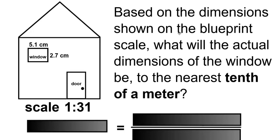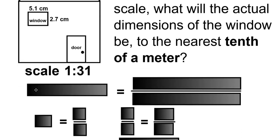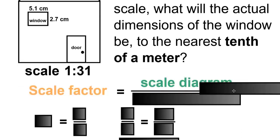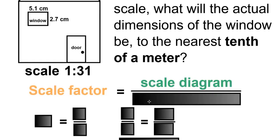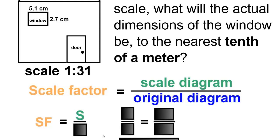Based on the dimensions shown on the blueprint scale, what will the actual dimensions of the window be to the nearest tenth of a meter? To solve this, we'll use the formula: scale factor is equal to scale diagram divided by original diagram, also written as SF equals S divided by O.